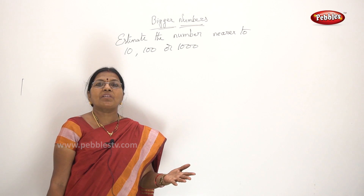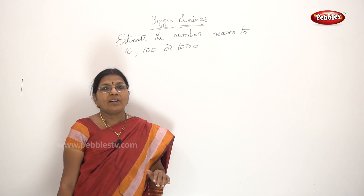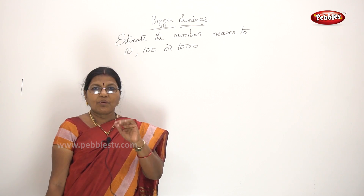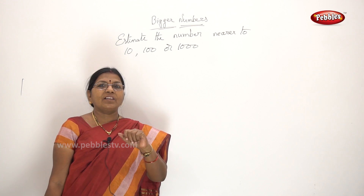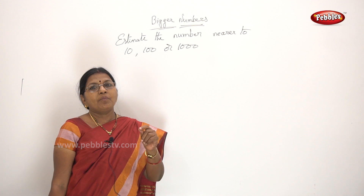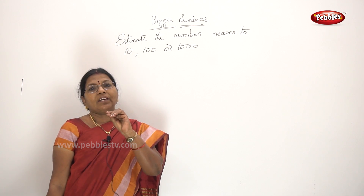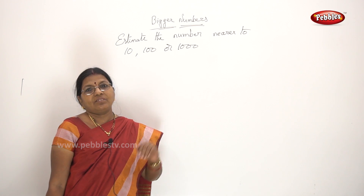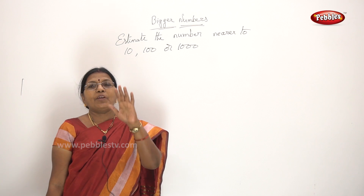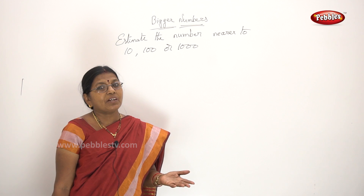What is the number of bigger and smaller numbers? We can identify all the numbers. What is the number of estimating? For example, if you have a dress or a friend, we can identify all the number of 255. What is the number of 255? We can identify all the number of 300. We can identify all the number of 99 rupees. If you have a number of 99 rupees, we can identify all the number of 100 rupees.